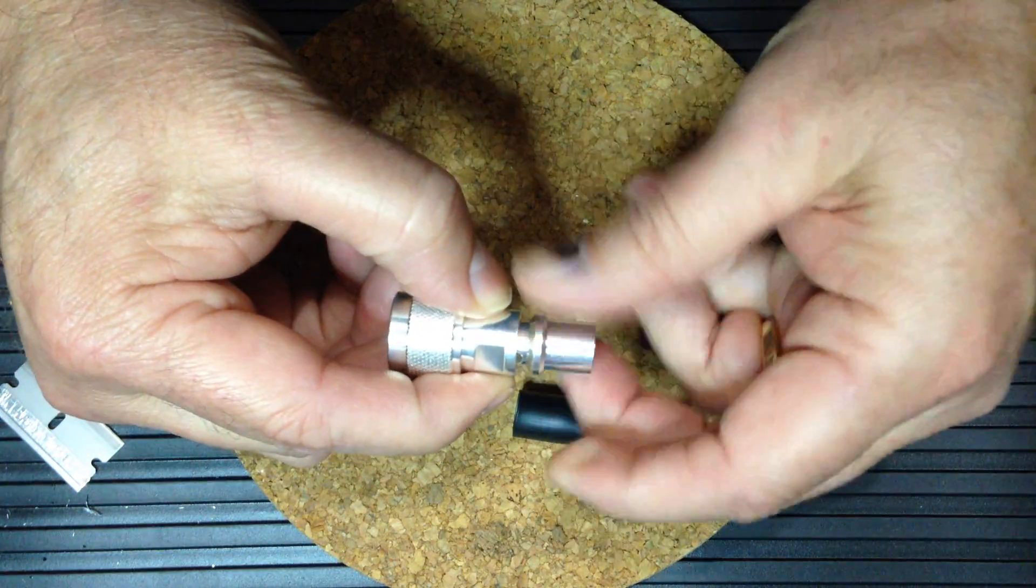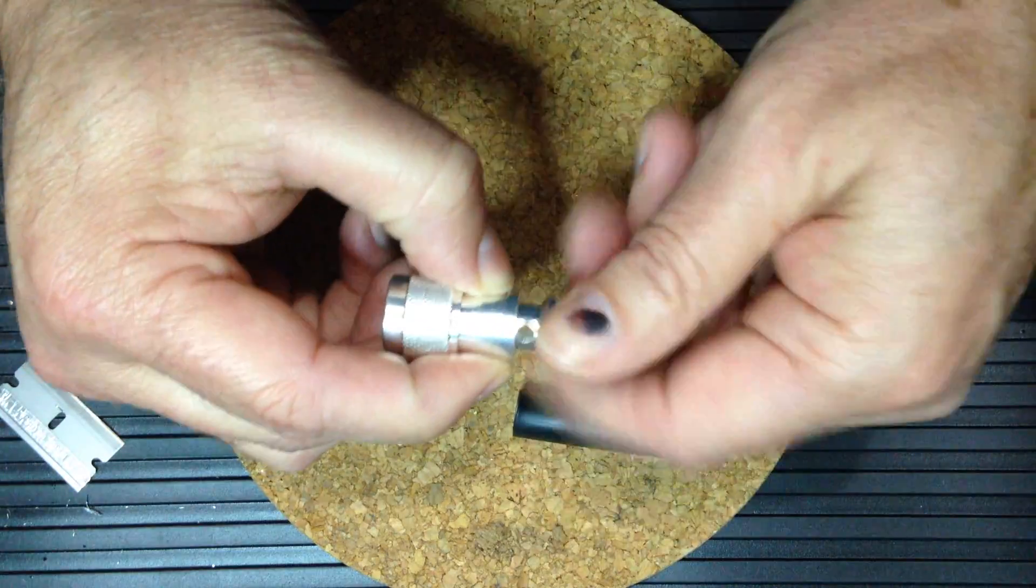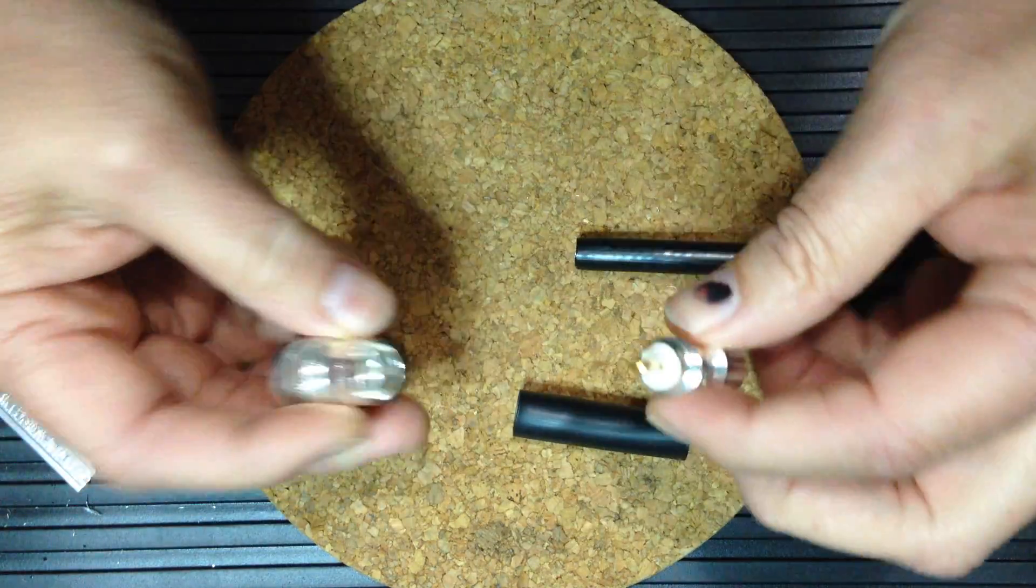The male end-type connector comes in two parts, a body and a barrel.